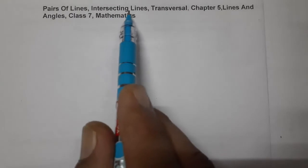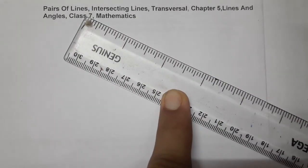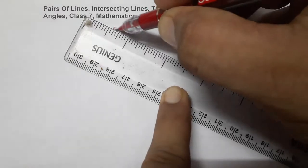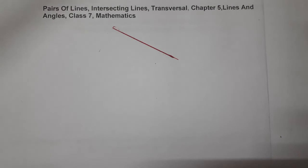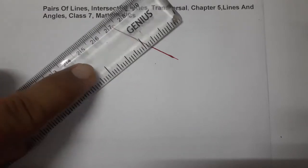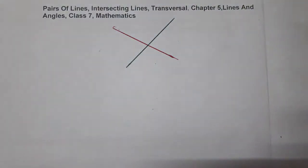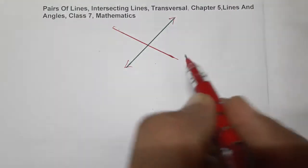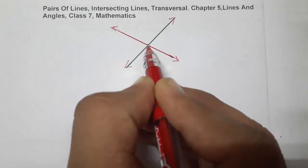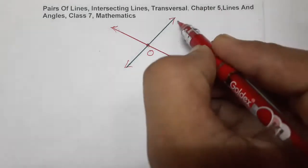Let's start with intersecting lines. Two lines L and M intersect if they have a point in common. Here are two lines — first line and second line — we will give them the name L and M. These two lines are intersecting because they have a point in common. Let this point be O and these lines be L and M.